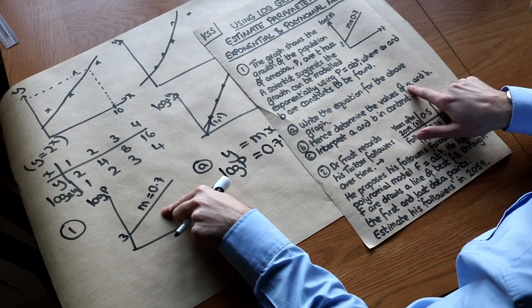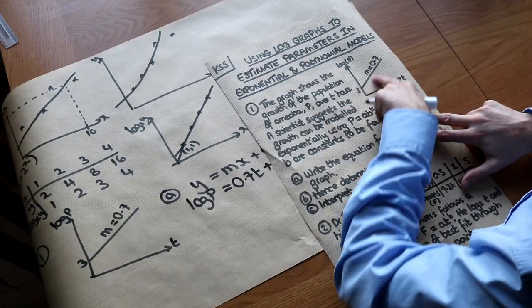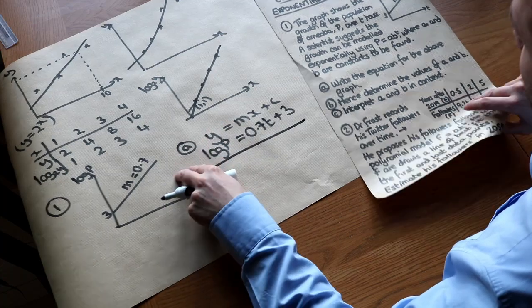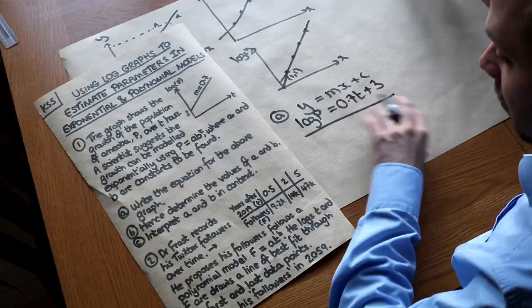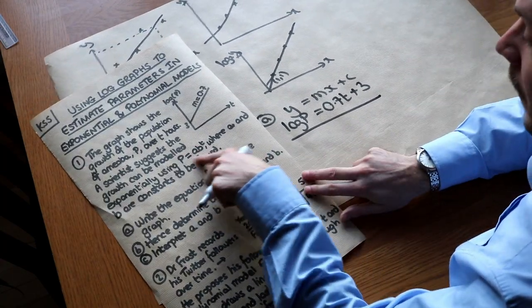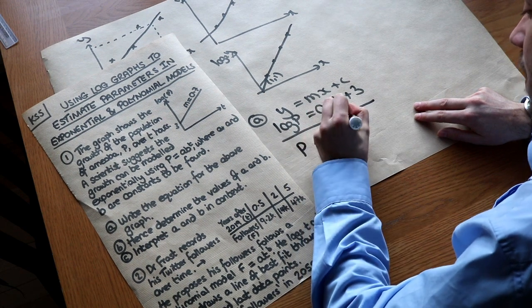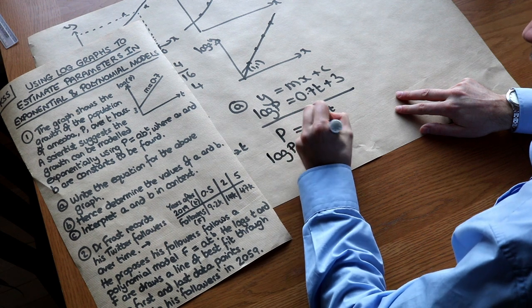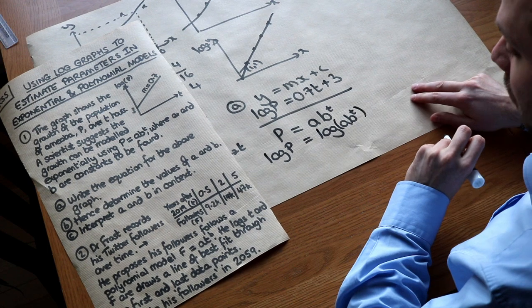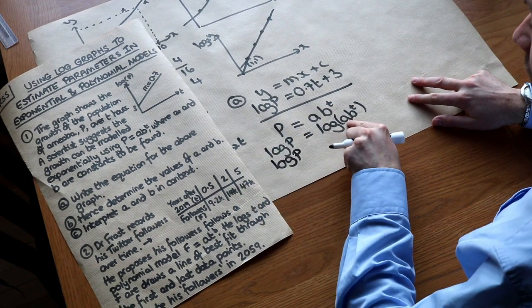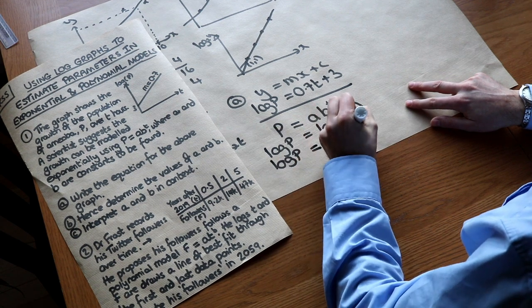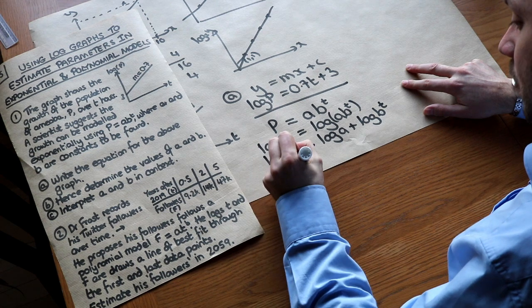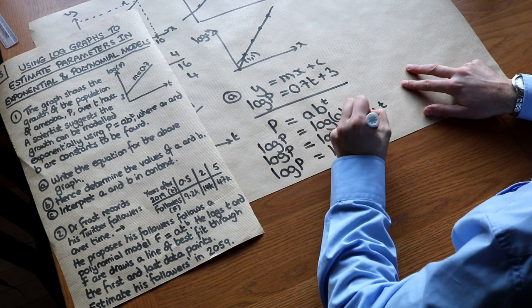Hence determine the values of A and B. Given the equation of the straight line when P values are logged, we work out the parameters of the original unlogged model. We always start with the original equation P equals AB to the T, then log both sides. Using laws of logs, log(AB^T) becomes log A plus T log B. So we get: log P equals log A plus T log B.